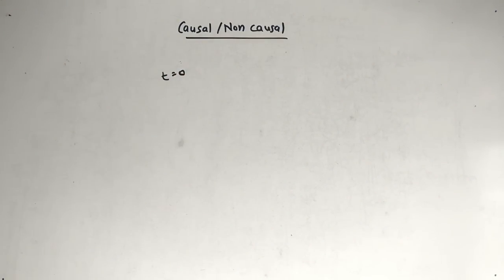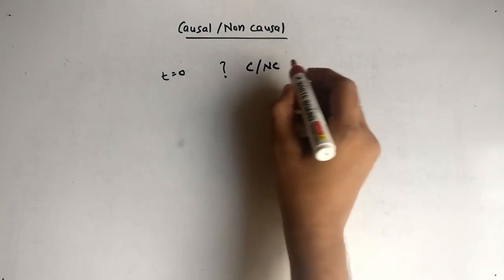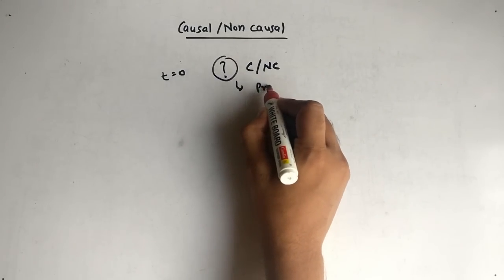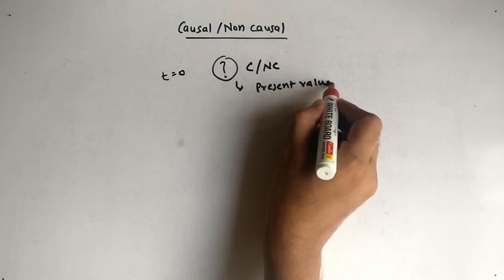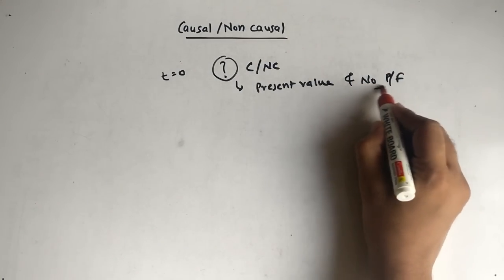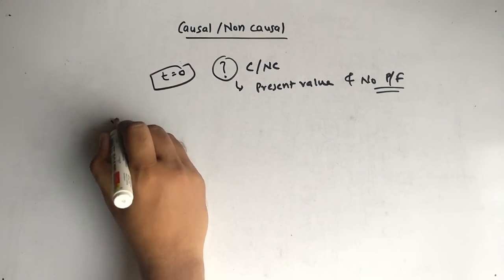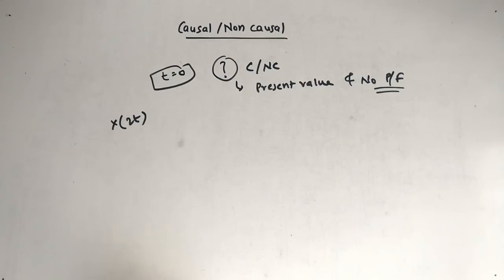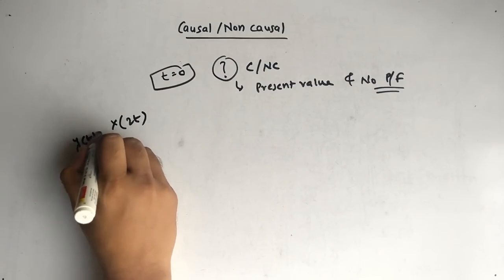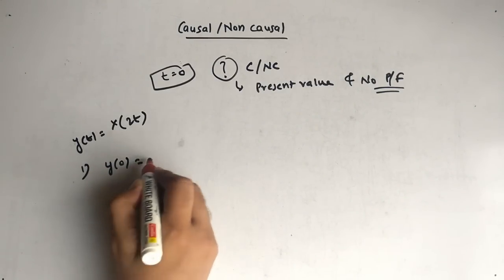What if we put t equal to 0 but we are still confused whether it is causal or non-causal? We are confused because it only shows the present value — there is no past or future when we put t equal to 0. Let's take the example y(t) = x(2t). After putting t equal to 0, we get y(0) = x(0). So now we are confused.